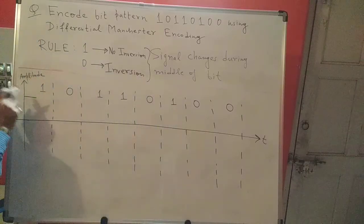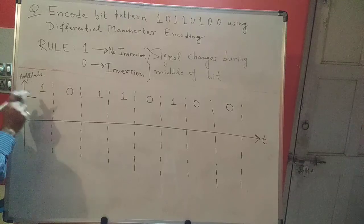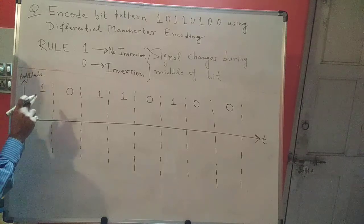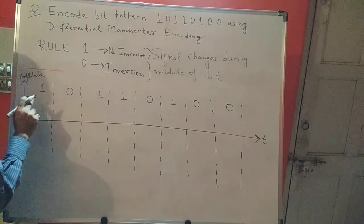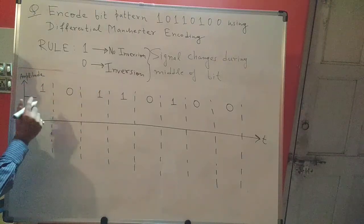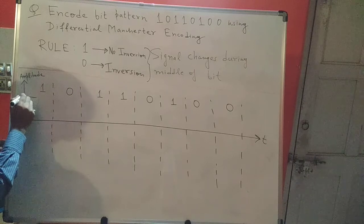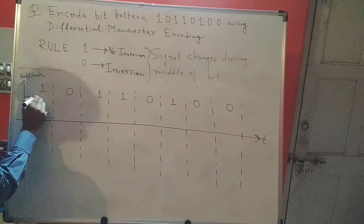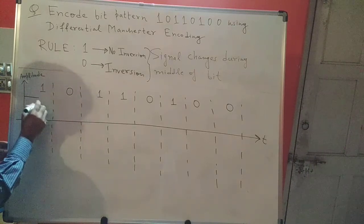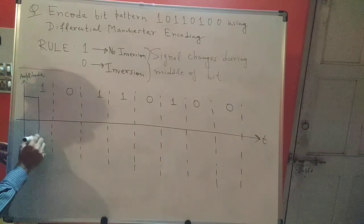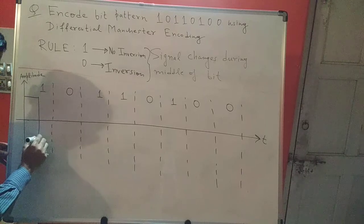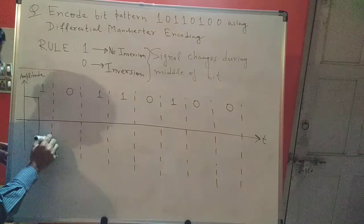Since one represents no inversion, if I'm above the time axis I'll remain above the time axis. Here I have a one, so I stay, and then there is a change during the middle of the bit. I change during the middle of the bit and here I am.